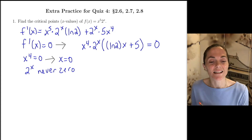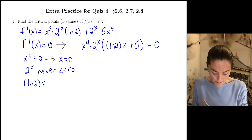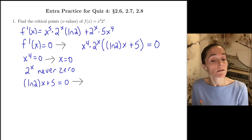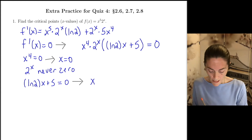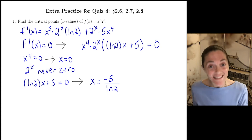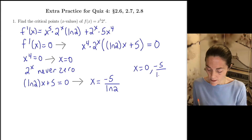2 to the x is an exponential function, it's always positive. And then this part: ln 2 times x plus 5 equals 0. We can just solve for x here. We get that x equals negative 5 divided by natural log 2. And so we have precisely two critical points: 0 and minus 5 divided by natural log of 2. This is the answer to number 1.